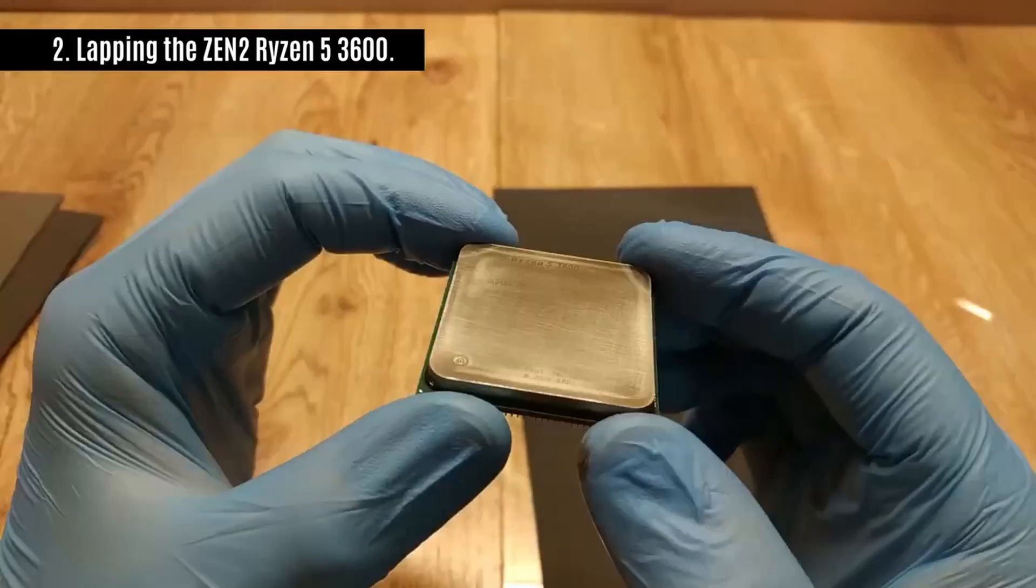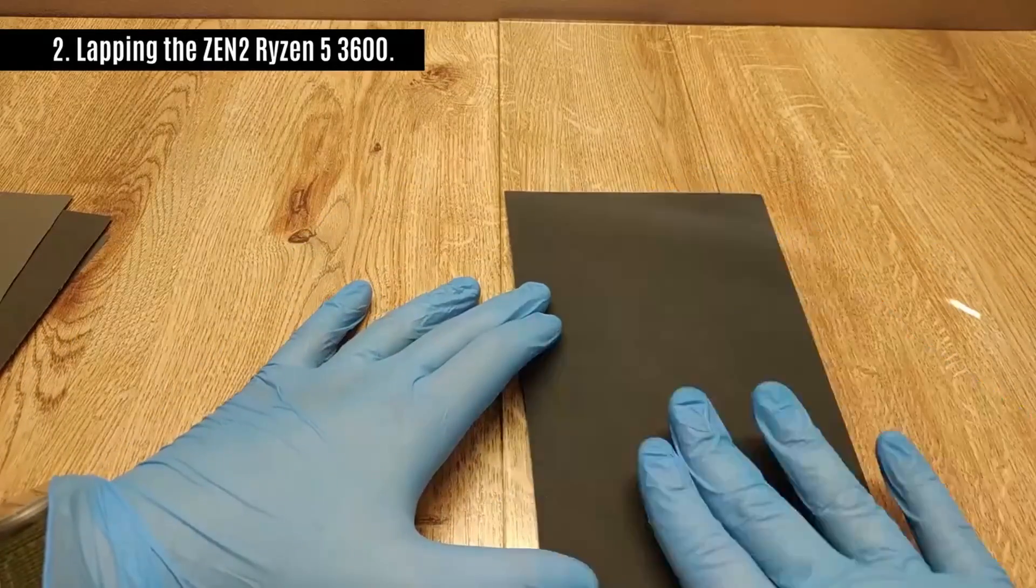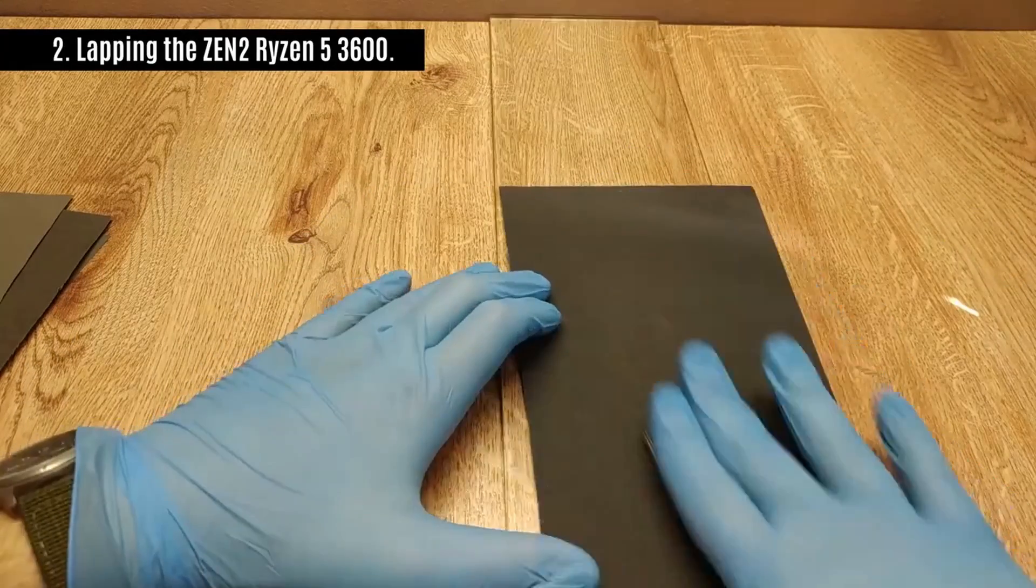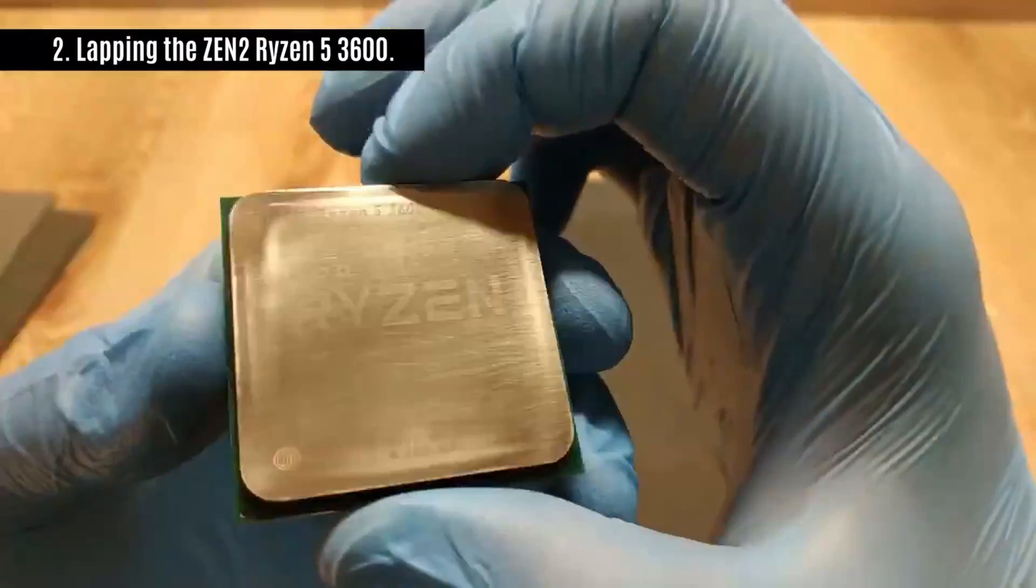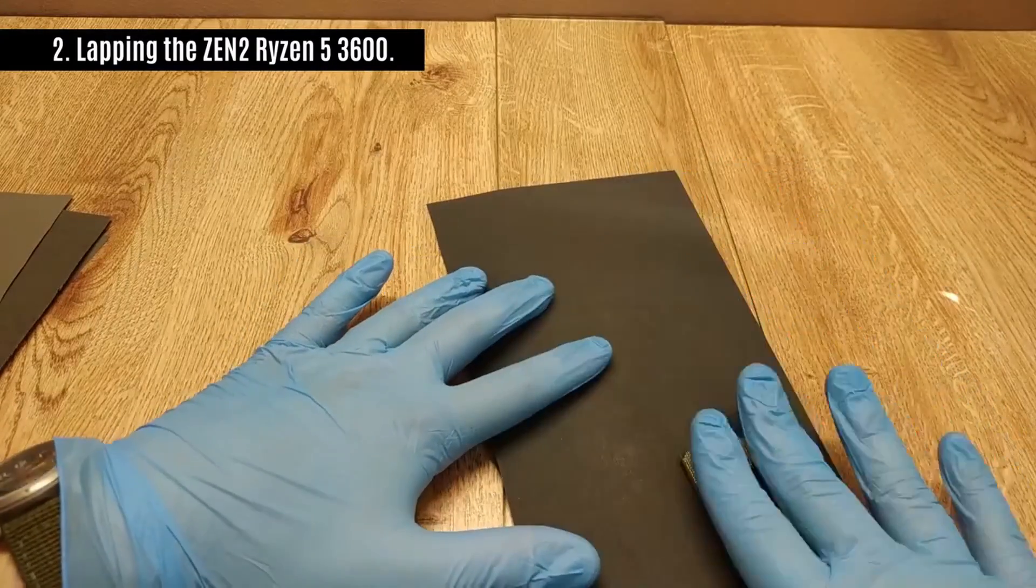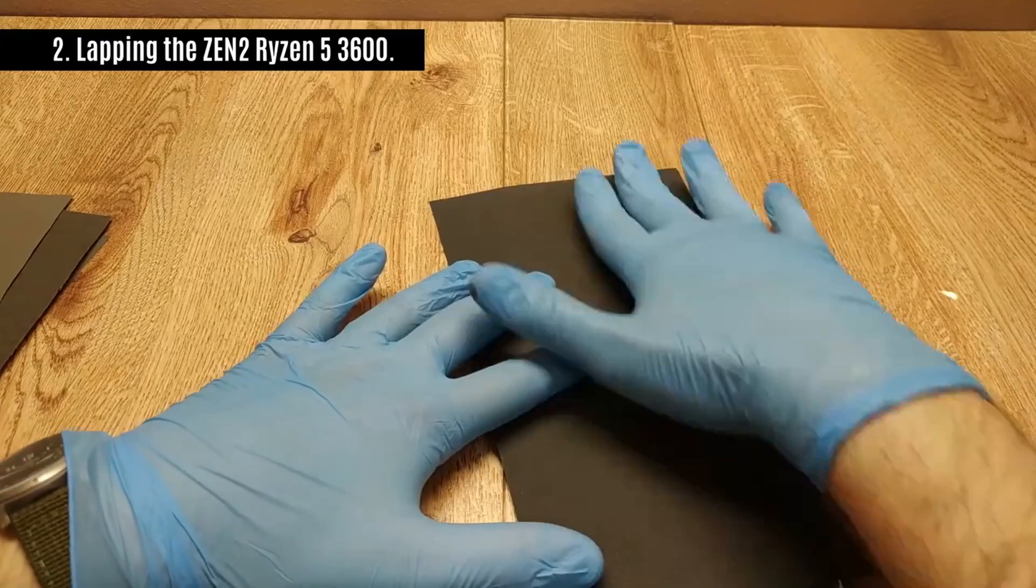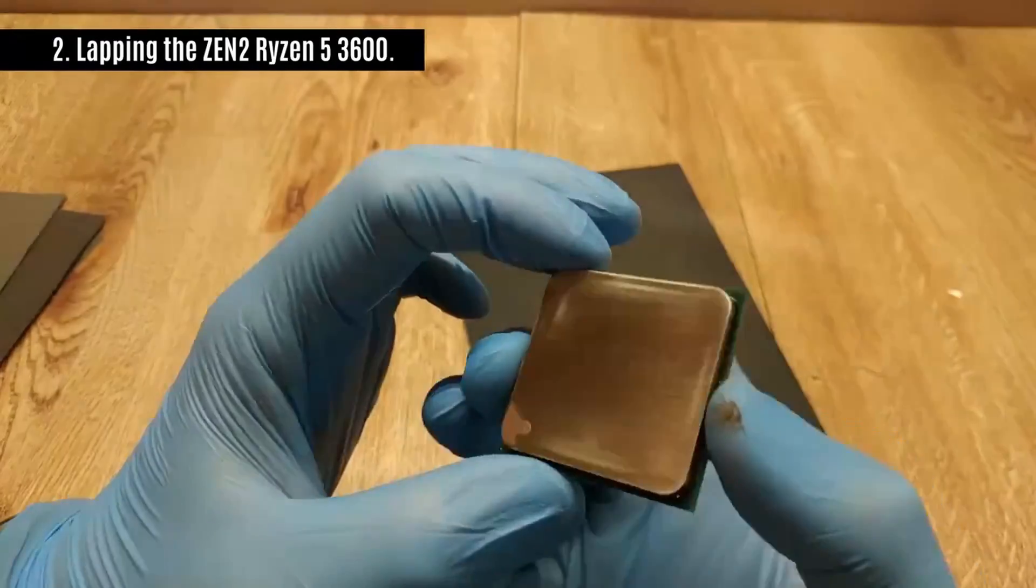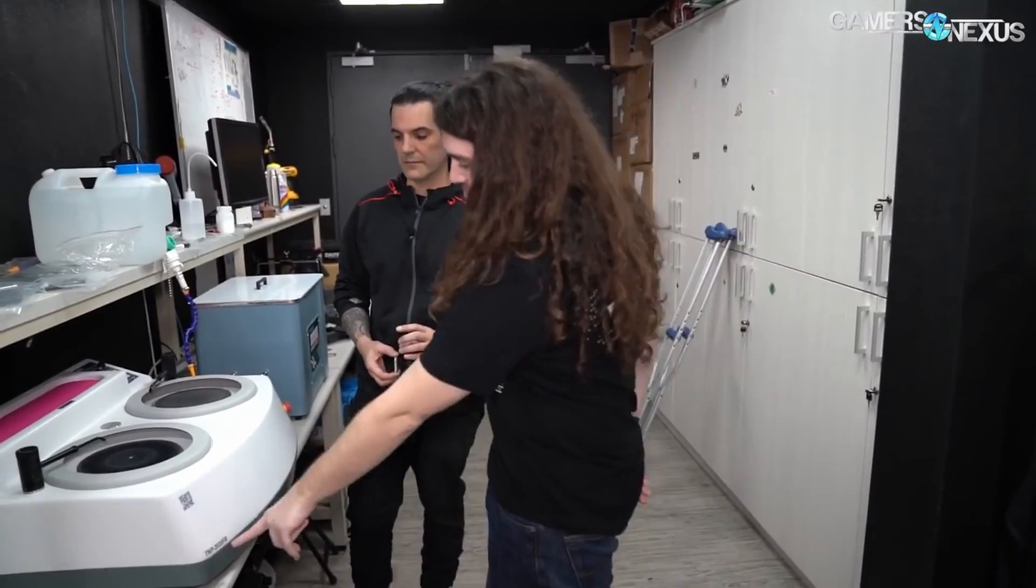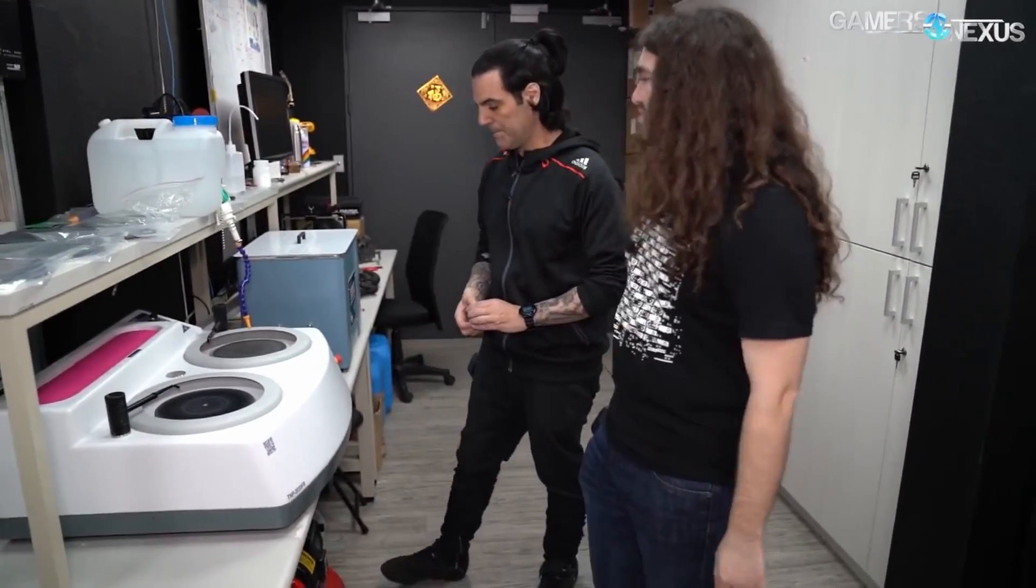However, the only things I'm able to find when searching online for CPU lapping is people using sandpaper. Even when Steve Burke of Gamers Nexus visited record-setting overclocker Kingpin and was shown the machine he uses in his office at EVGA, it was a sanding machine. A TNP 2020 FR, a sanding machine.